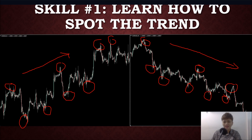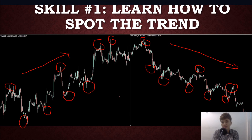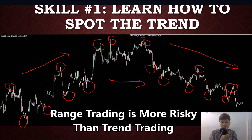Does trend trading give you a higher probability, or does range trading give you a higher probability of making money in the long term? I would say for beginners and also for experienced traders it's better to trade along with the trend. In the ranging market there's a lot of volatility, a lot of whipsaws, and it's very easy to get stopped out. It tends to give you a lot of false breakouts and false signals, so I'd prefer trading the trend over the range.